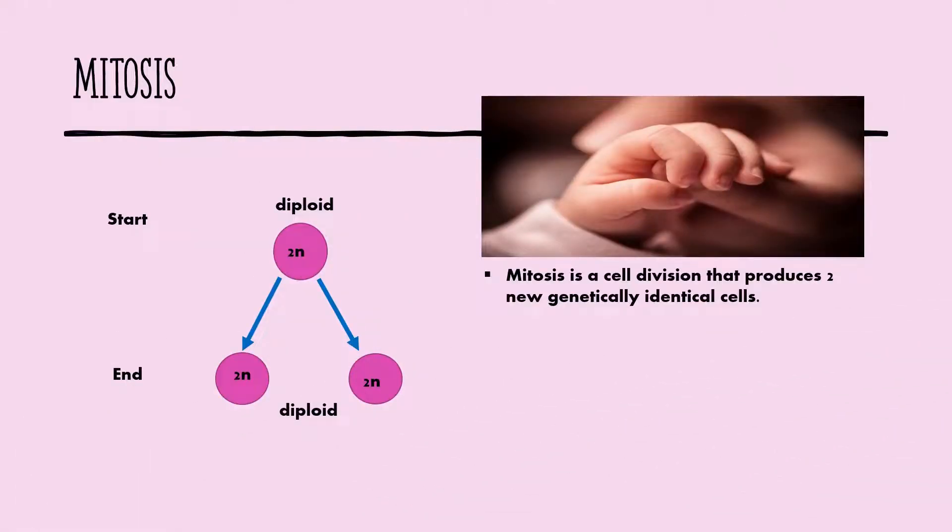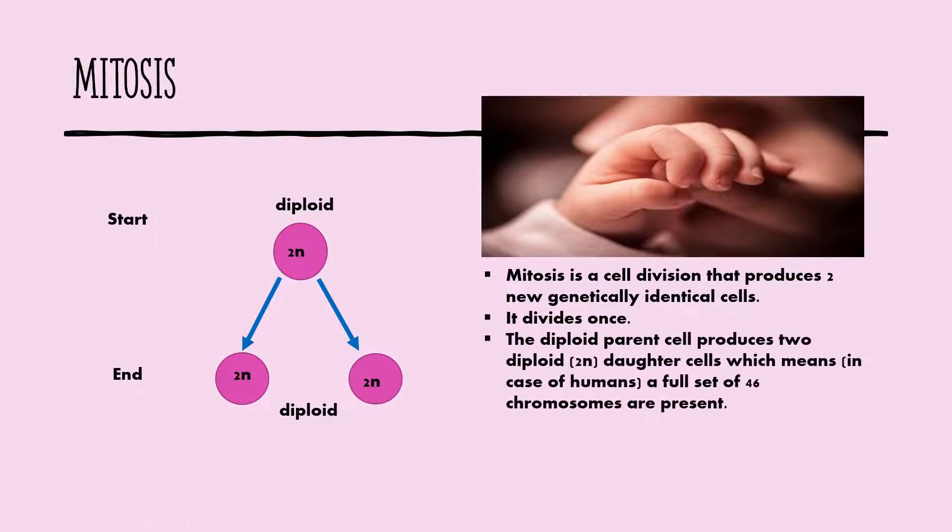Mitosis is a cell division that produces two new genetically identical cells. It divides once. The diploid parent cell produces two diploid 2N daughter cells, which means in case of humans, a full set of 46 chromosomes are present.